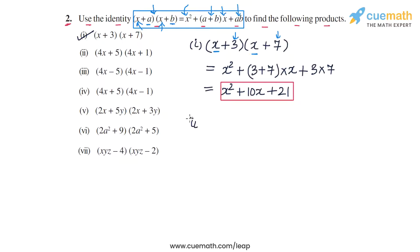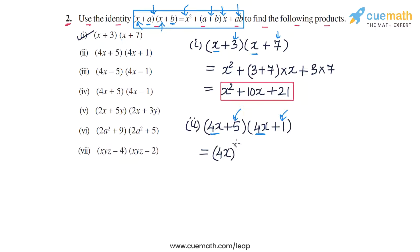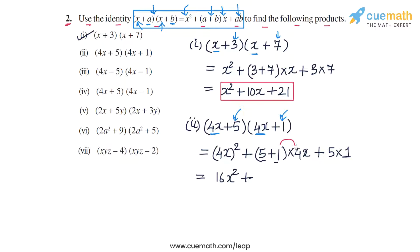In part two, we have (4x+5)(4x+1). The common term is 4x, and the non-common terms are 5 and 1. We take the square of the common term: (4x)² = 16x². Then 5+1 = 6, and 6×4x = 24x. The third term is 5×1 = 5. So the product is 16x² + 24x + 5.